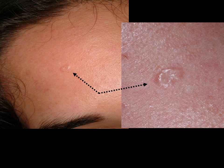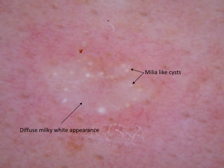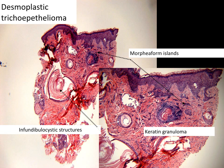Yet another case of a stable lesion on the forehead. Notice the raised border and the central indentation. What are the structures on dermoscopy? Once again, multiple milia cysts and a shiny white background. This lesion also revealed features consistent with desmoplastic trichoepithelioma.